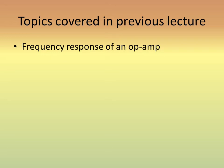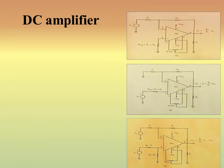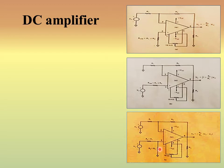First we will discuss the DC amplifier. There are three diagrams showing three configurations. In the first figure, the input is applied at the inverting end. In the second figure, the input is connected at the non-inverting end. In the third figure, two signals are applied at both the inverting and non-inverting ends. So a DC amplifier can be obtained in inverting, non-inverting, and differential configurations.